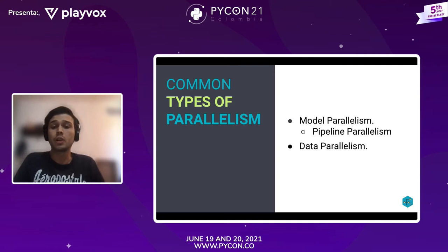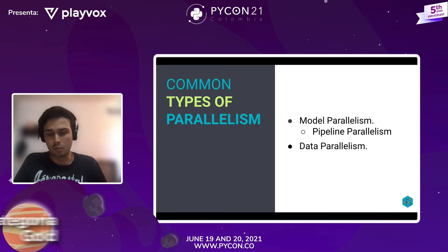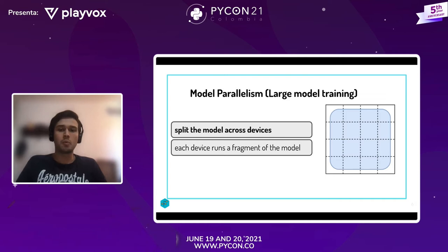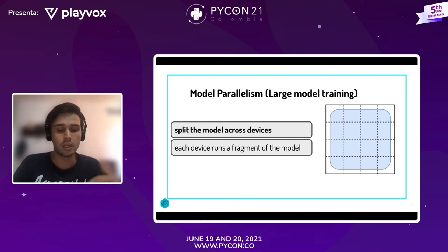Luego de hablar de esas motivaciones, voy a pasar a hablar de los tipos más comunes de paralelismo, que son por modelo o por datos, y posteriormente me voy a enfocar un poquito más en el paralelismo por datos. El paralelismo por modelo consiste en repartir el modelo en diferentes dispositivos, que pueden ser GPUs, y entonces cada dispositivo se encarga de correr una parte del modelo y pasarle las activaciones que genere al siguiente.